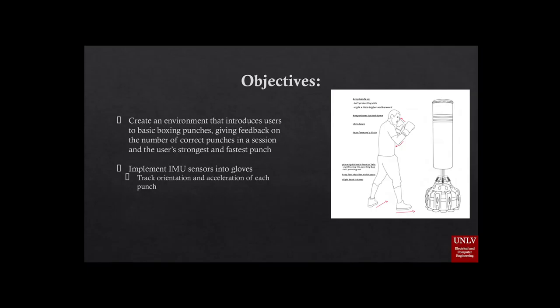Inertial measurement unit sensors were implemented into the boxing gloves to be able to track the absolute orientation and acceleration of the user's fists throughout the session.